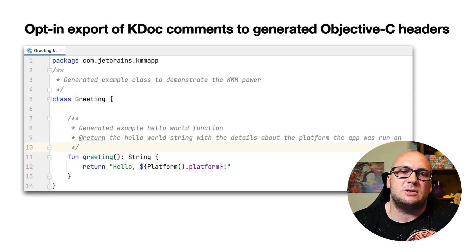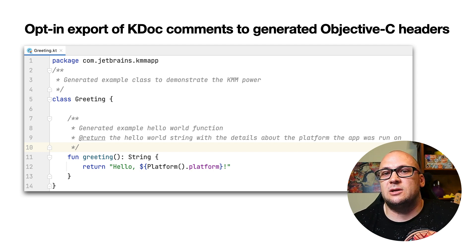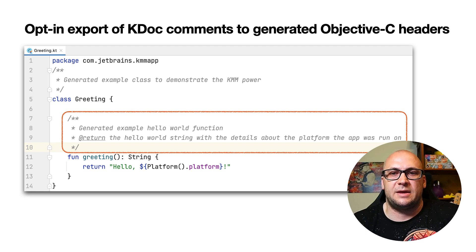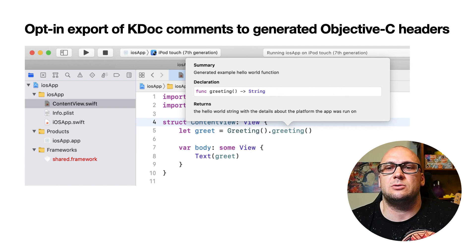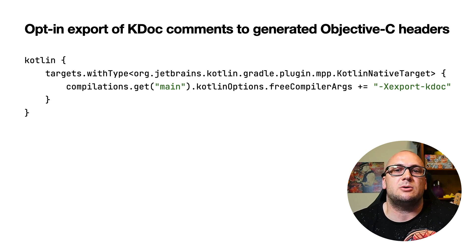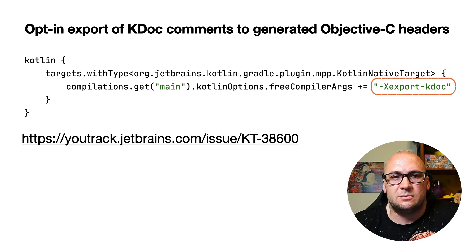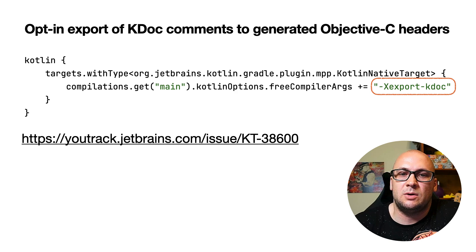You can now set the Kotlin Native compiler to export documentation comments from Kotlin code to the Objective-C frameworks generated from it, making them visible to consumers. For example, code with KDoc will be used to generate a corresponding framework with the same documentation content, and it will be visible in Swift code. To try out this ability to export KDoc comments to Objective-C headers, use the Export KDoc compiler option and add the following lines to the Gradle projects you want to export the comments from. There is also a YouTrack ticket where we collect feedback about this feature.